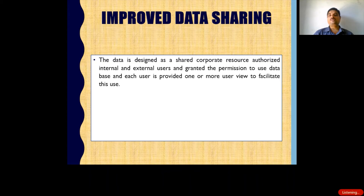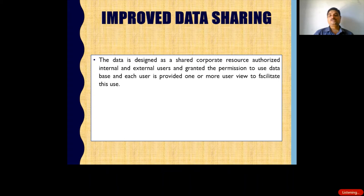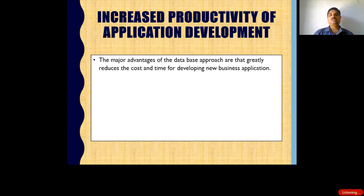Users are given permissions — for example, employees have their own permissions and are authorized. Each user is assigned a user view. That is improved data sharing: data is stored in a centralized location and accessed using login credentials such as username and password. Authorized different application developers can access, update, and store the data, making application development easy for different users.